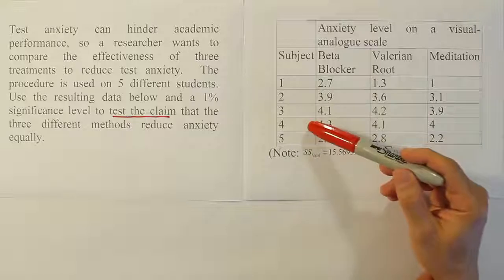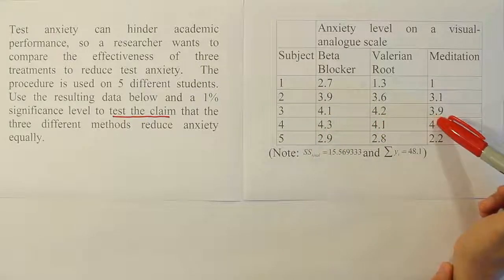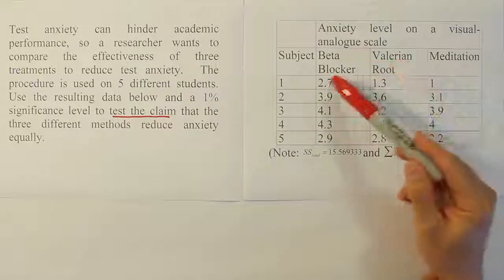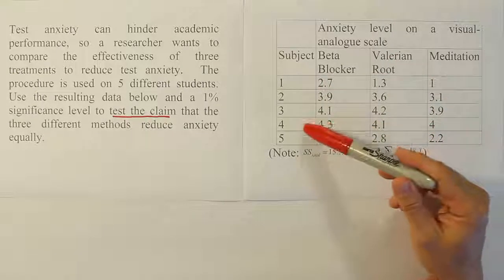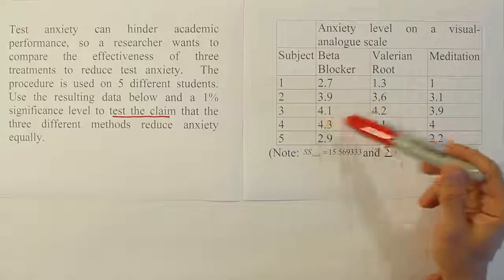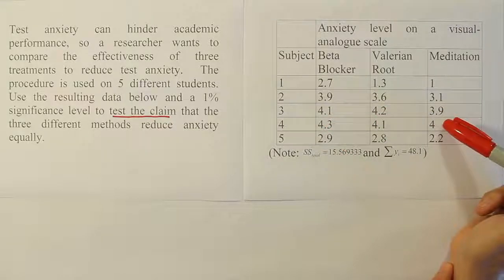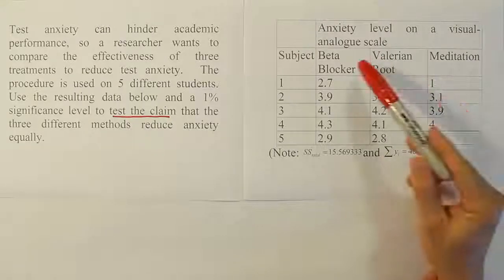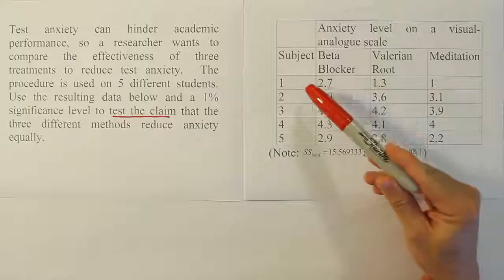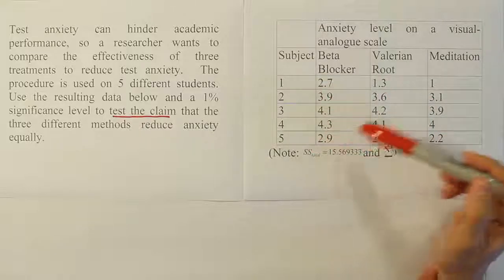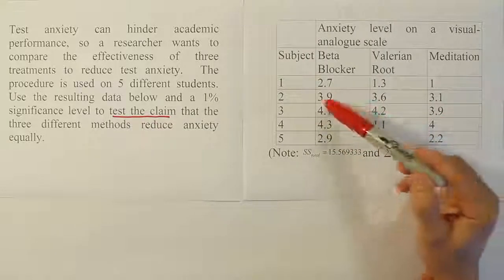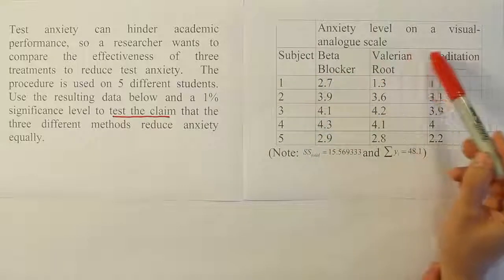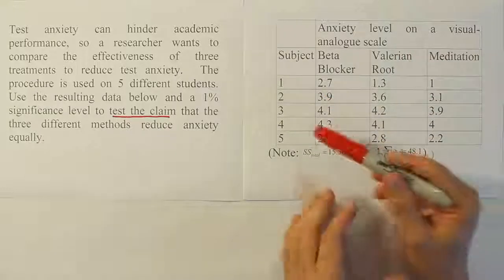The idea behind the problem is that we want to block out the differences between the subjects, because some of them may have naturally higher anxiety levels before tests than others. For example, subject 1 looks like they generally have a lower anxiety level than subject 4. We know those differences exist, but we probably don't care much about them — we're not looking to see if students have different anxiety levels. We're looking to see how these treatments work to reduce anxiety.